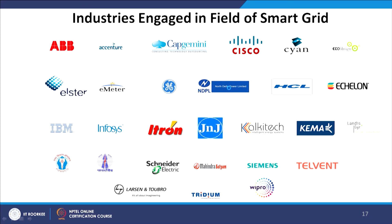You can also choose a future with industry. To name a few companies working in smart grid: ABB, Accenture, Capgemini, Cisco, Gyaan, HCL, NDPL, General Electric, E-meter, Elster, IBM, Infosys, Kema, Siemens, Schneider, Mahindra, Power Grid, Bosoco — there are so many currently focusing on smart grid research. I do see a long way for viewers to go ahead if you are taking this course seriously.